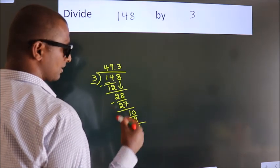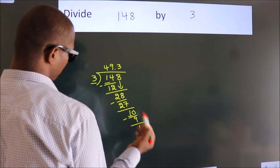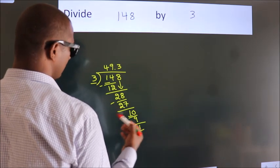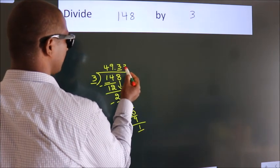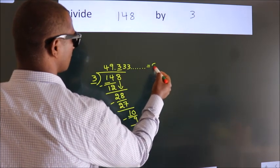Now you observe, we had 1 here, and we got 1 again. That means this number keeps on repeating. So this is our quotient.